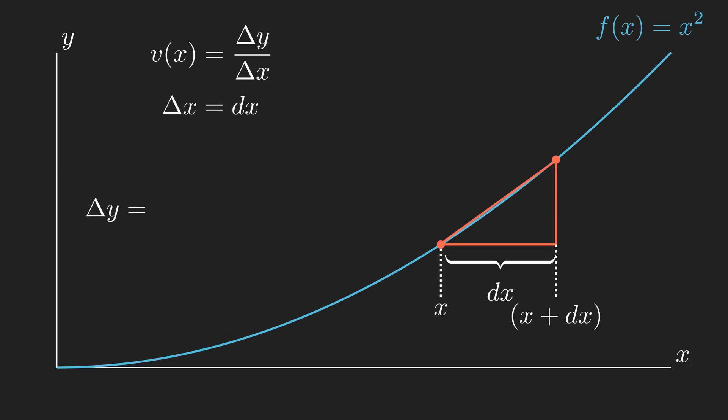Next, let's look at delta y. To find y from x, we can use the equation f of x, so our starting coordinate is simply f of our starting x coordinate, or f of x. Similarly, our final coordinate is f of x plus dx, therefore delta y is equal to f of x plus dx, subtract f of x.